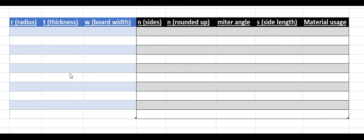I created an Excel spreadsheet where I input the formulas that I just walked through. It accepts as inputs the inner radius of the ring that we want to build, the thickness of the ring, the width of the boards that we want to build with. And it outputs the number of sides, the miter angle, the side length, and a percentage of the material that would be used. Let's type in a couple examples.